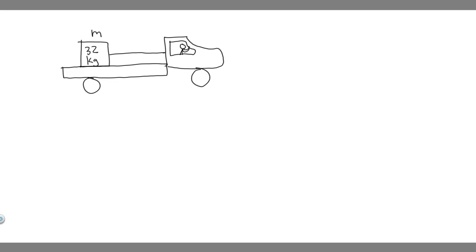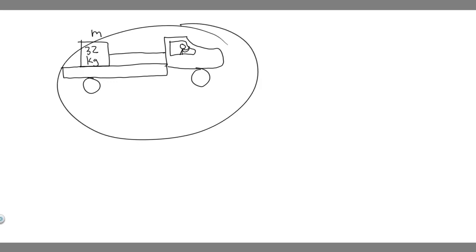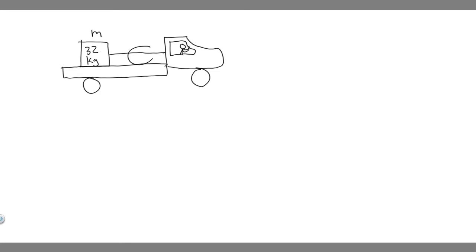So this here is the truck. We have this crate and we have this cord — the cord is holding it on. We're going to find the maximum acceleration this truck can reach so that the cord doesn't break and the crate doesn't fly off.